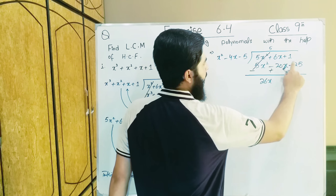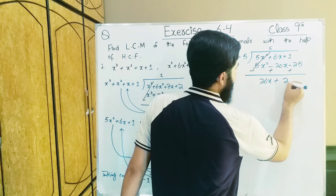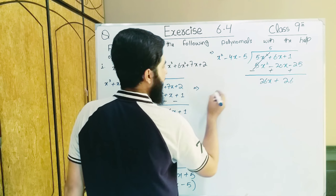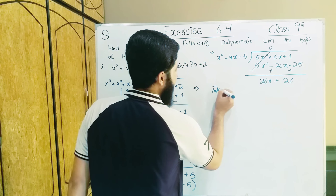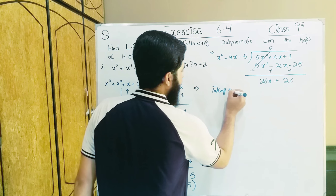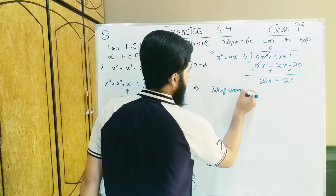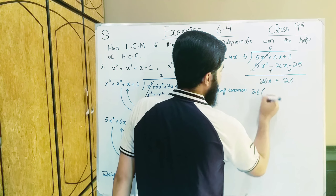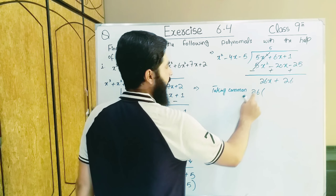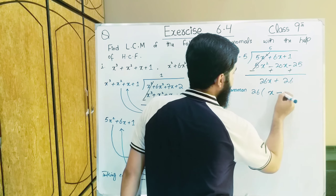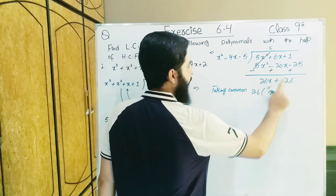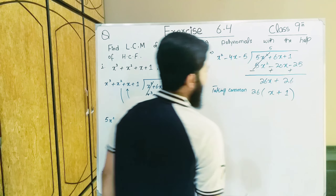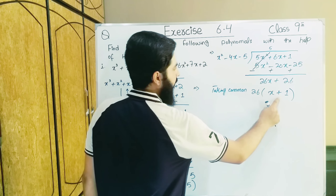Now we take common again — taking common. What is common in both? 26 is common. 26 comes outside; behind it: x + 1. After 26, what remains? 26 was there — after bringing it out, 1 is left. Now observe the inside value again.